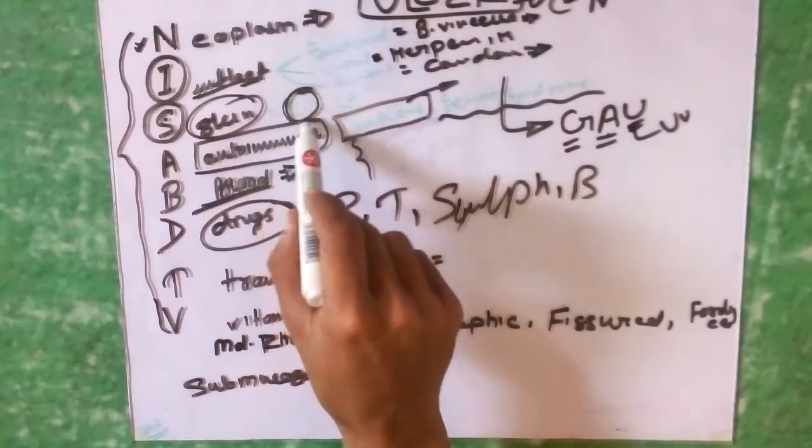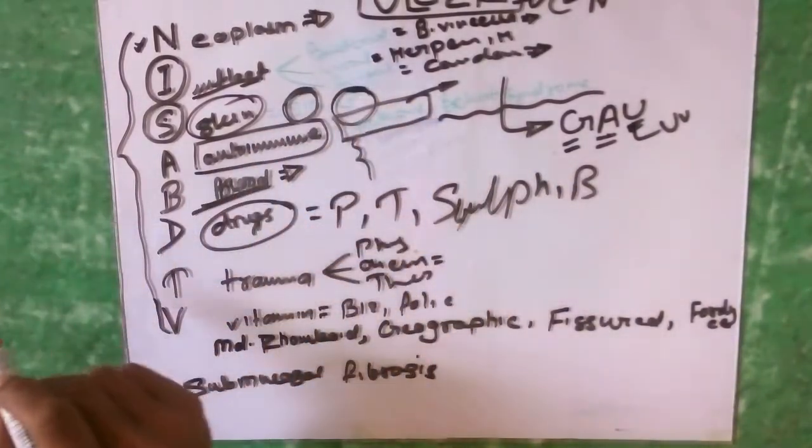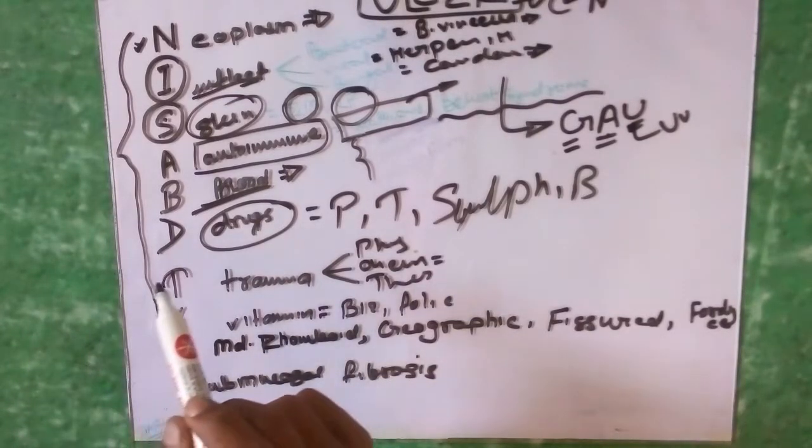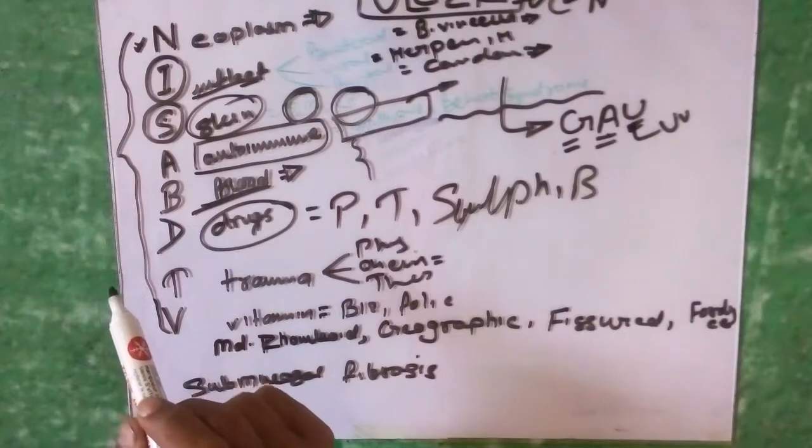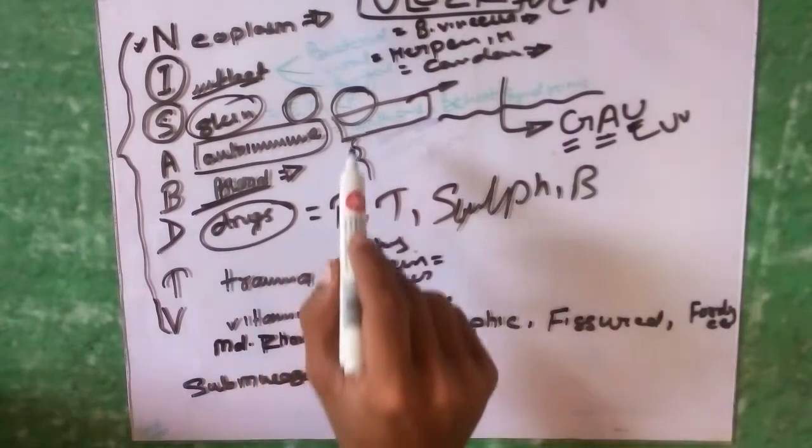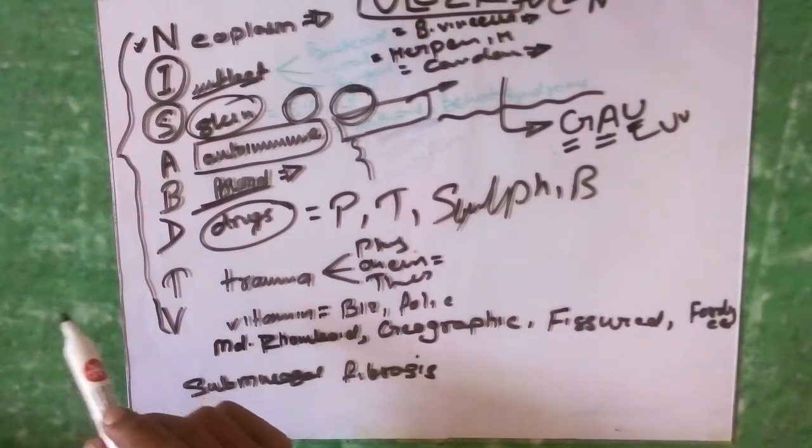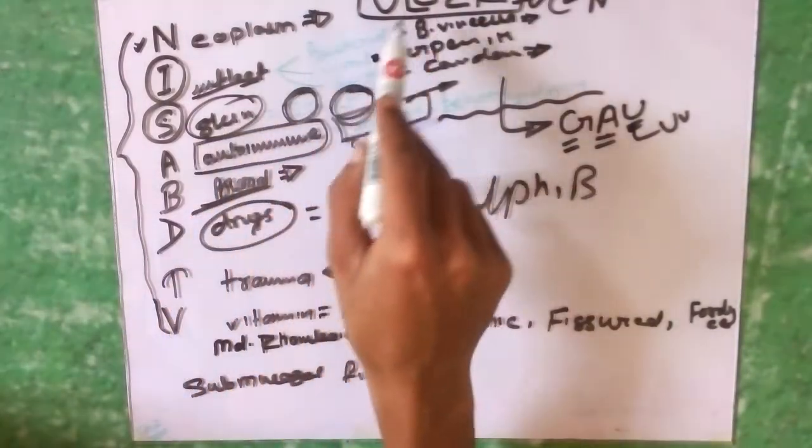Lichen planus is purple pruritic polygonal papules of the buccal mucosa, and usually topical steroid is given for lichen planus. We are done with the ulcer of the buccal mucosa.